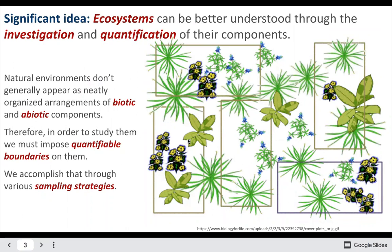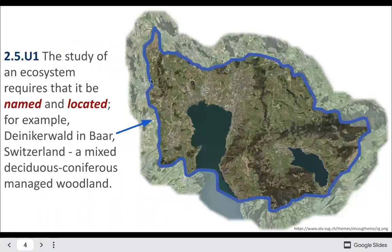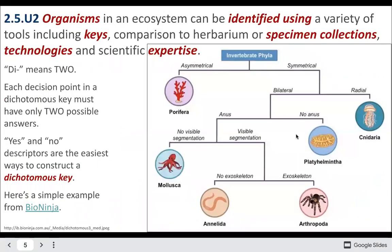We could measure the biotic, or living, components, or we could measure the abiotic, non-living, components of the ecosystem. The study should be of a named and located ecosystem — you should say specifically which region you're talking about. For example: 'I'm studying the piñon-juniper woodlands of Sedona, Arizona.'